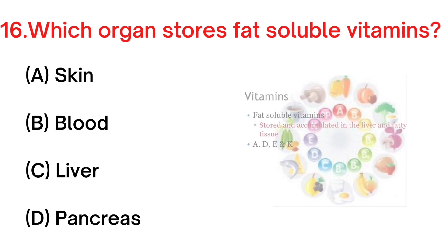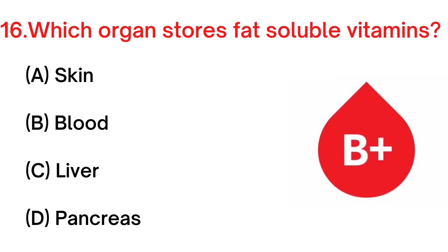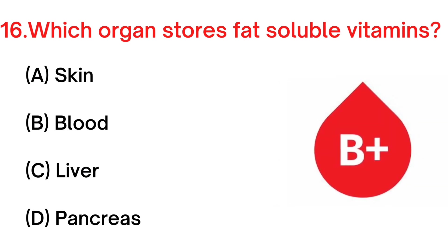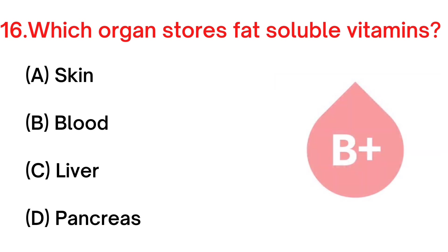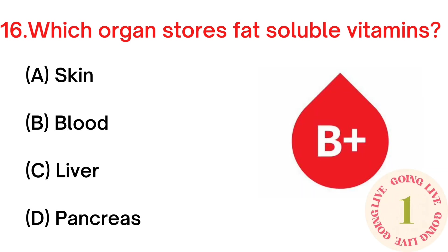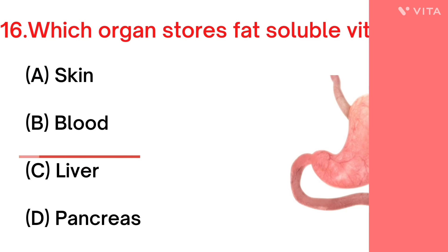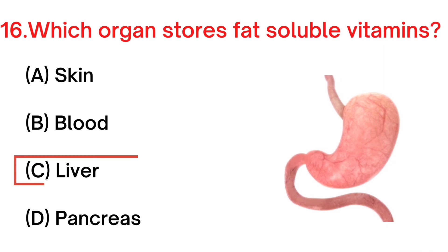Your next question: which organ stores fat-soluble vitamins? A. Skin, B. Blood, C. Liver, D. Pancreas. Your answer is C. Liver.